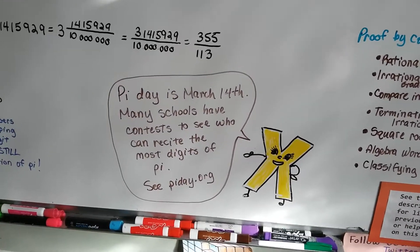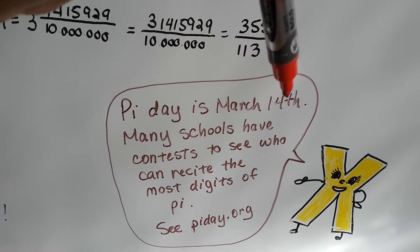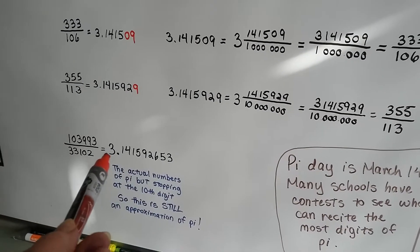And, Pi Day is March 14th. It's the third month, the 14th day. 3-14. See? 3-14.